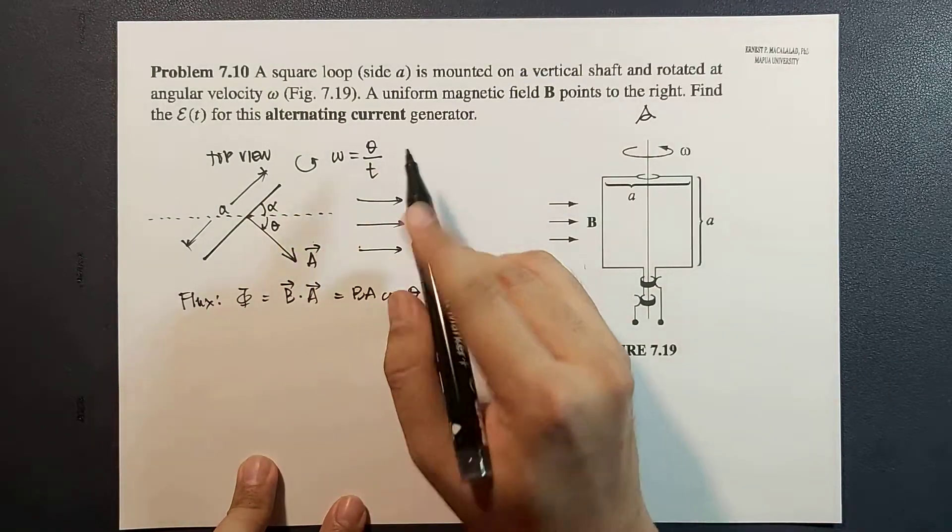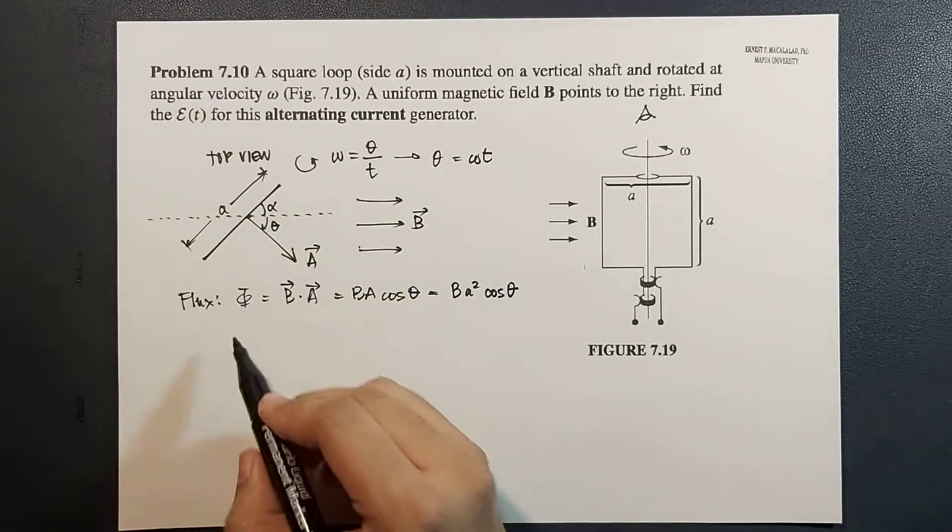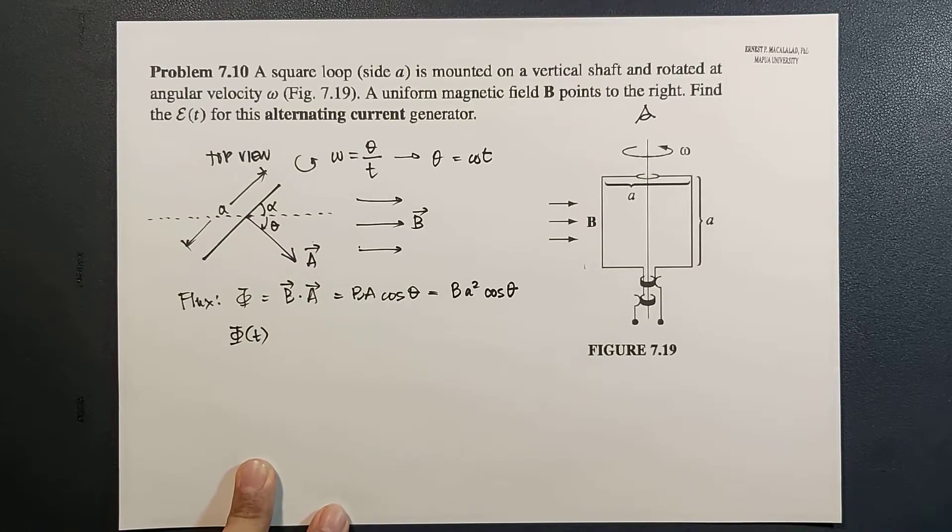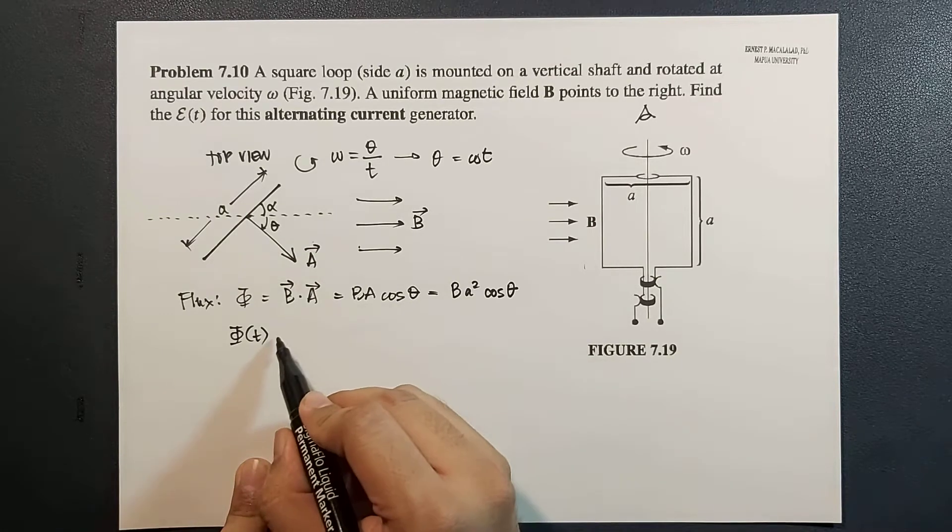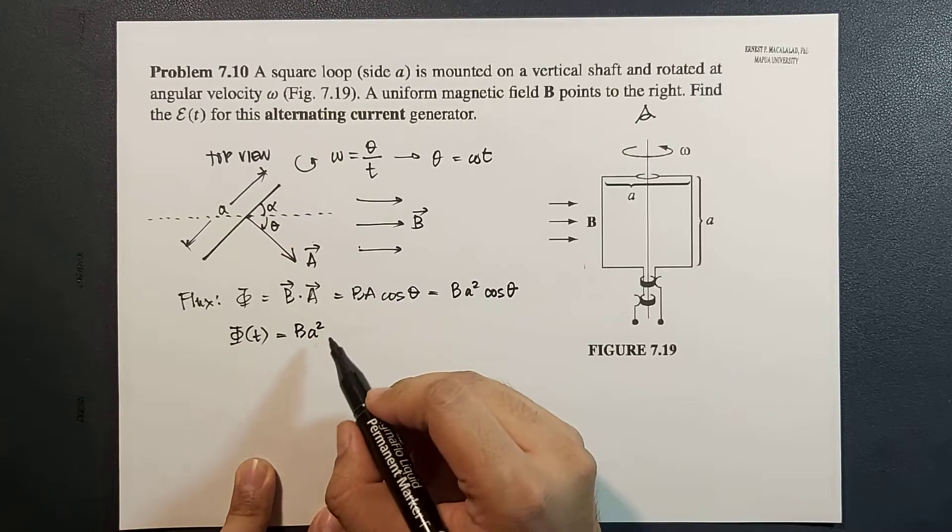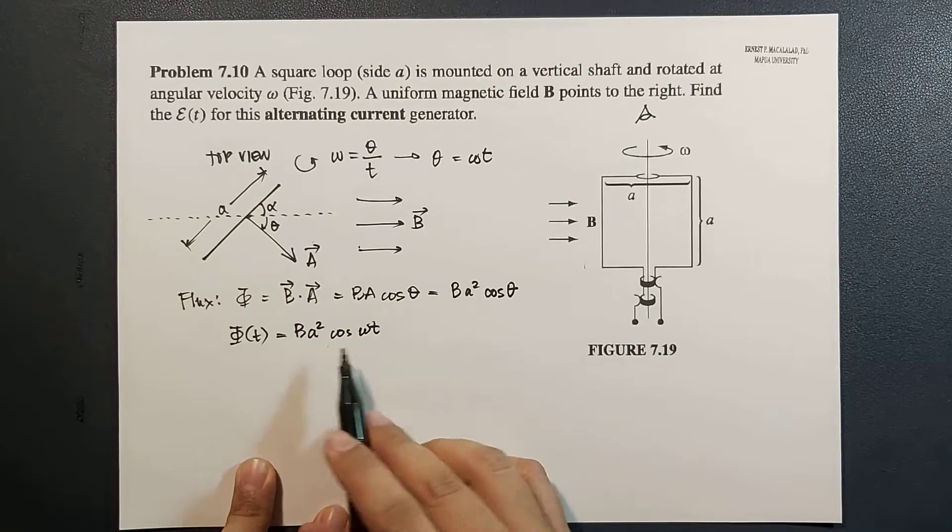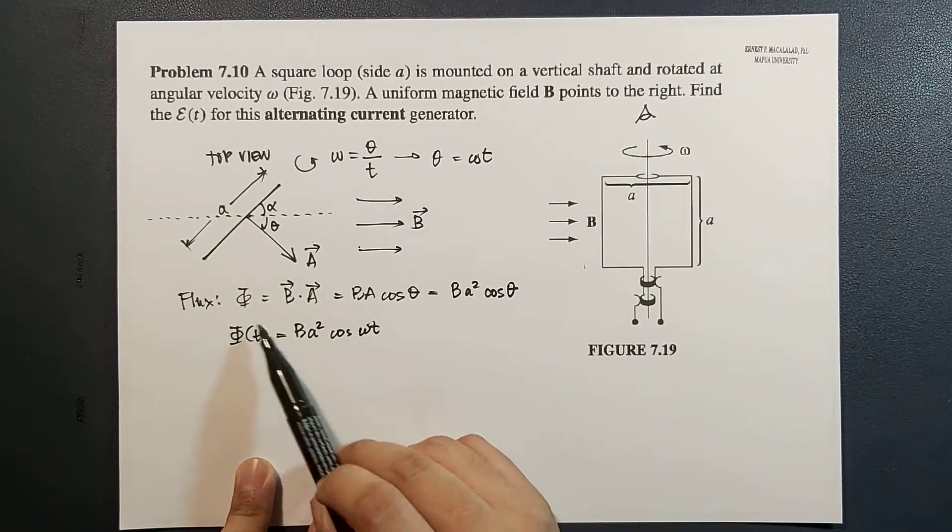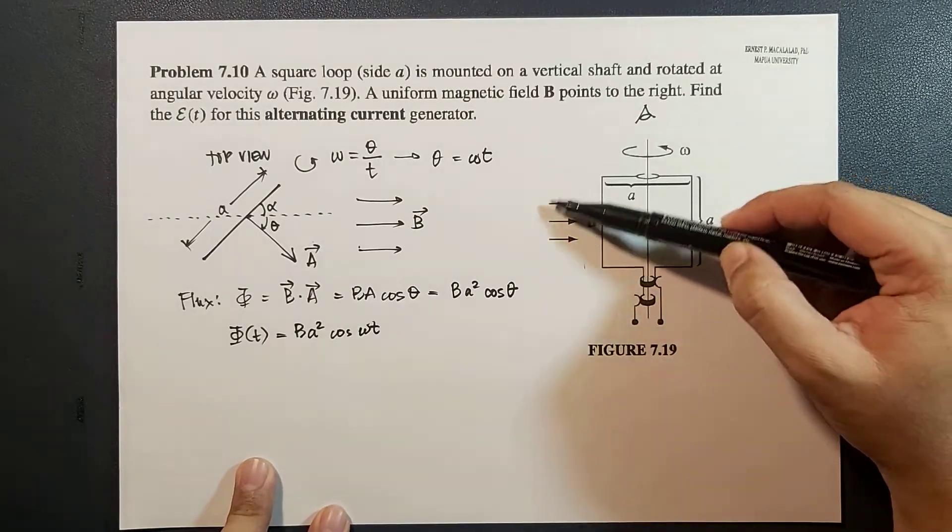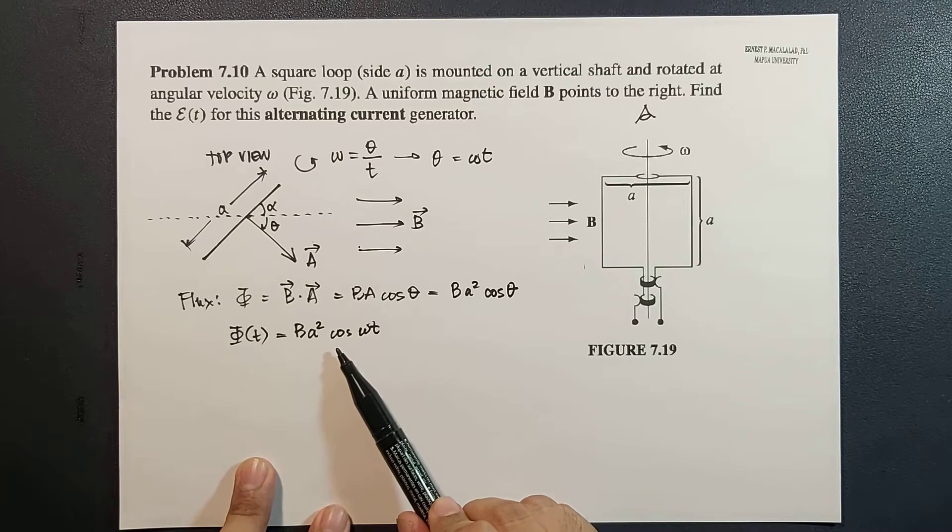And because theta is equal to omega t, therefore the flux will now become a function of t, which is now equal to B a squared cosine omega t. So this tells you that the flux passing through this area due to this magnetic field will vary sinusoidally.